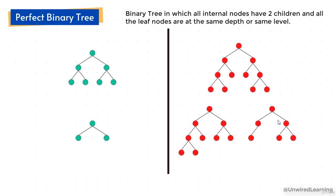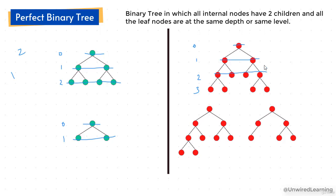In a perfect binary tree, all internal nodes have 2 children and the leaf nodes are at the same depth or same level. That means the complete tree should be in a proper structure and properly filled. If we have 2 levels, all elements should be filled across those 2 levels. The wrong examples show cases where a child is missing at some point. In simple terms, all elements in every level should be completely filled.